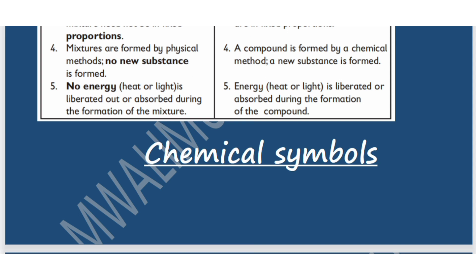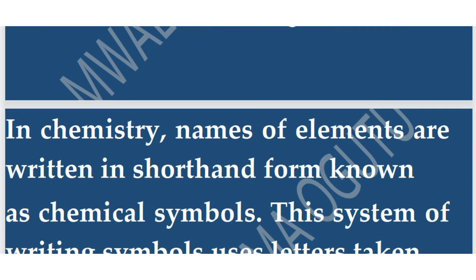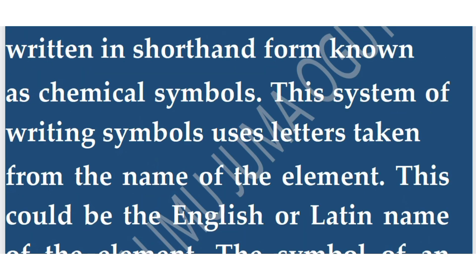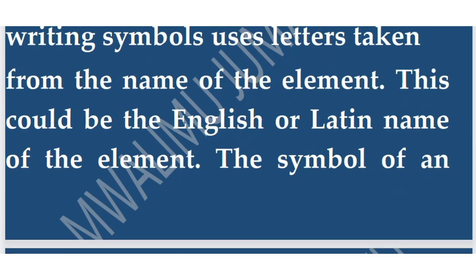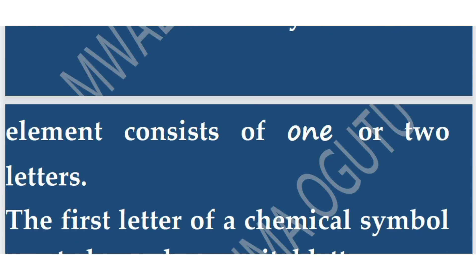Now let's discuss chemical symbols. In chemistry, names of elements are written in shorthand form known as a chemical symbol. This system uses letters taken from the English or Latin name of the element. The symbol of an element consists of one or two letters.